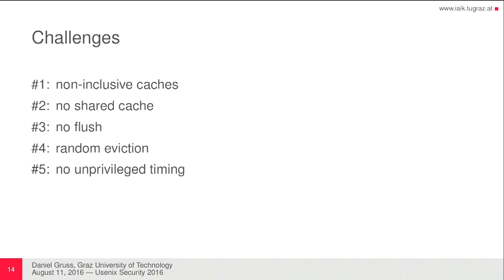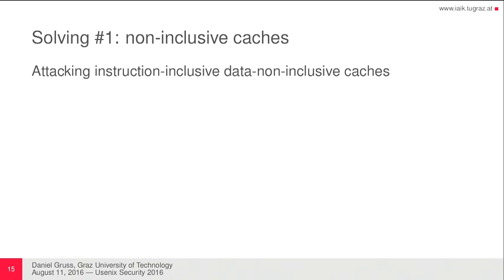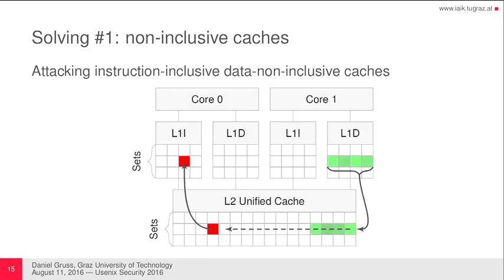That was the challenge overview. We will now step through the challenges and how we solved them. For non-inclusive caches — specifically an instruction-inclusive, data-non-inclusive cache — all data in level one instruction caches must also be in the level two unified cache, but data can be in either or both levels with no strict policy. We can access enough data to spill our level one data cache, which will fill the entire level two unified cache set over time, and by this we can evict the victim's instructions.